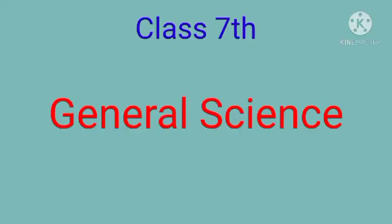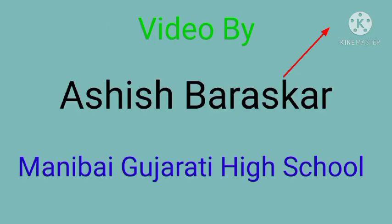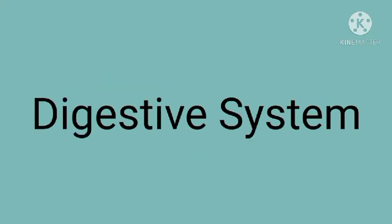Hello students, welcome to the video of 7th General Science. We have already started Chapter 12 - the muscular system and digestive system in human beings. You can check the first part at the right corner of the screen. Today we are going to discuss about the digestive system. There are so many organ systems present in our body.